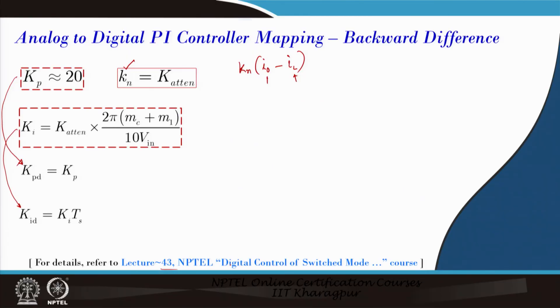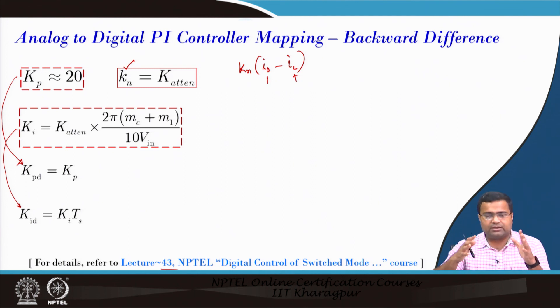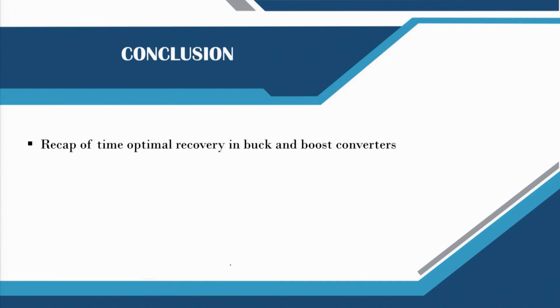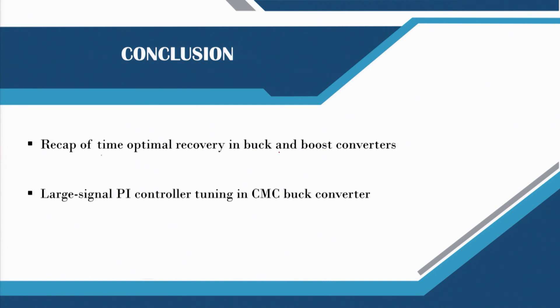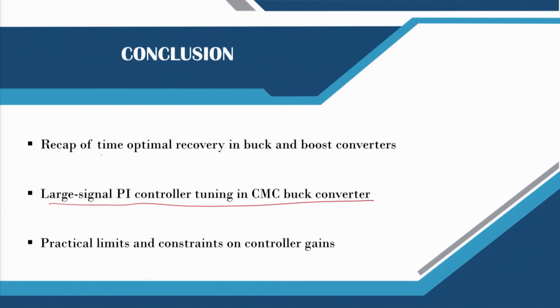In the next lecture we will take MATLAB case studies to examine practical constraints and their limits. In this lecture we recapitulated time-optimal recovery in a buck and boost converter, discussed large-signal PI controller tuning in a current mode control buck converter, and identified some practical limits and constraints on controller gains. In the next lecture we will show how this looks when simulated using digital current mode control. Thank you very much.